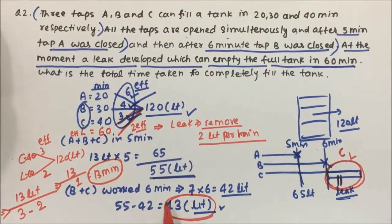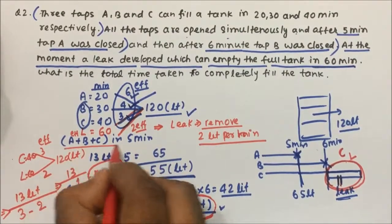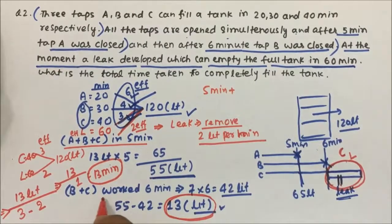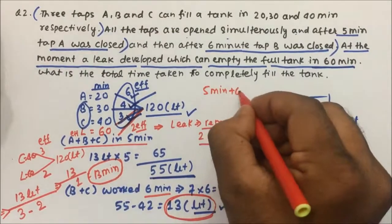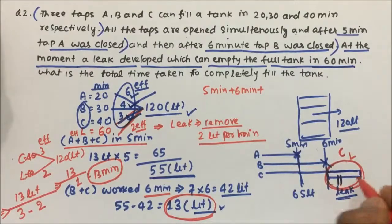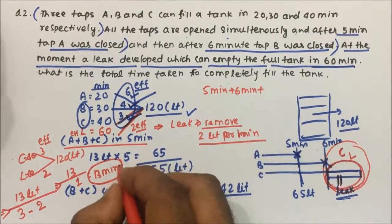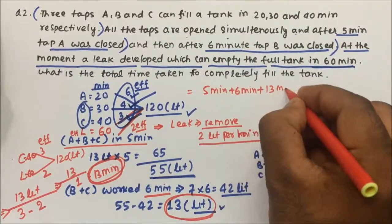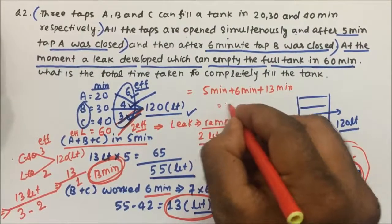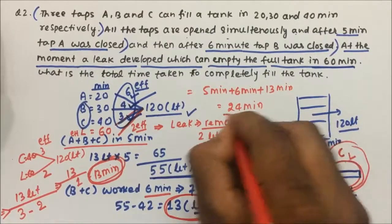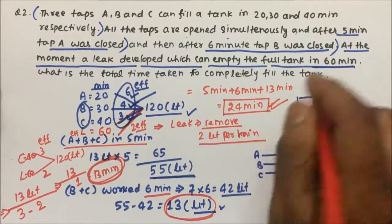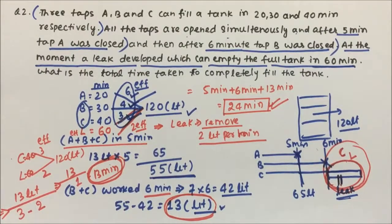The total time taken is: A plus B plus C worked for 5 minutes, B plus C worked for 6 minutes, and C plus the leak worked for 13 minutes. So 13 plus 6 is 19, and 19 plus 5 is 24 minutes. The complete process to fill the tank required 24 minutes in total. Thanks for watching the video.